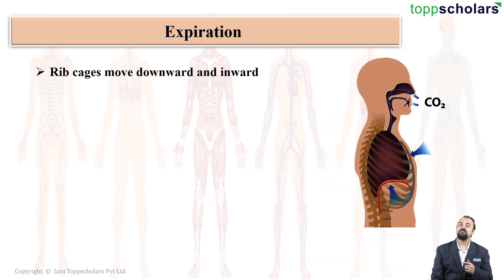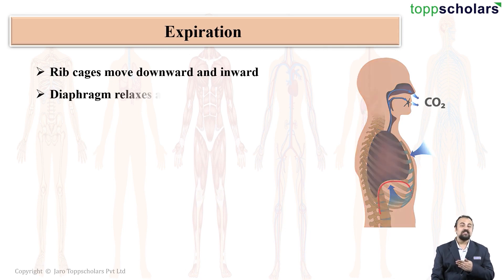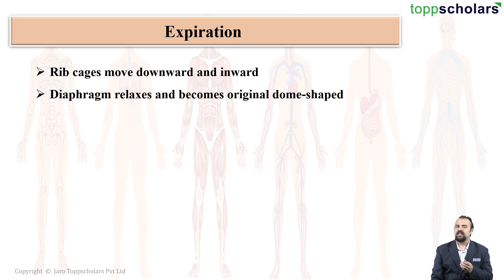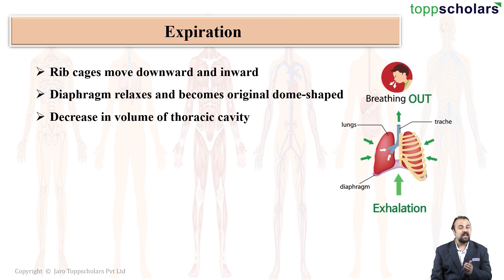At the same time, the ribcage moves downward and inward, and the diaphragm, which was previously flat, now becomes dome-shaped. What is happening here is that the overall volume in the thoracic cavity has decreased.